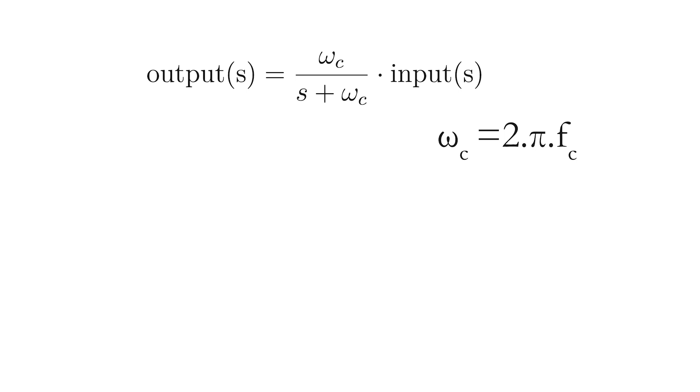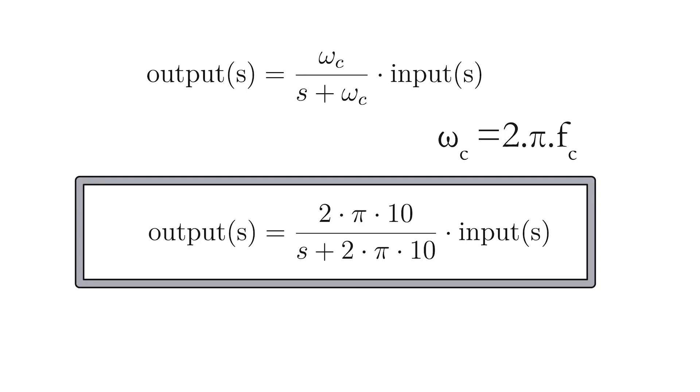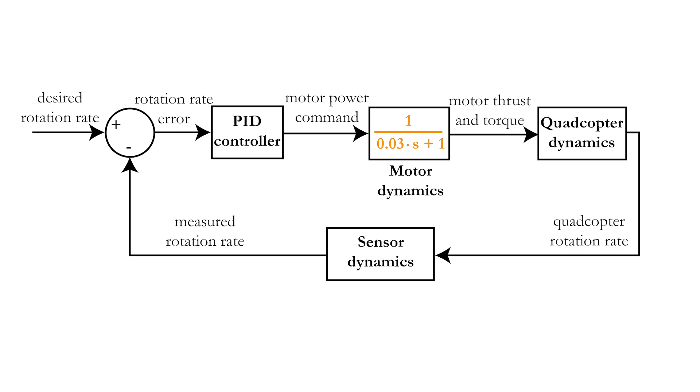Omega c is equal to 2 multiplied with pi multiplied with the cutoff frequency of 10 Hz, giving the frequency domain transfer function shown on the screen. This means that we can characterize the sensor dynamics in our control loop diagram as well.